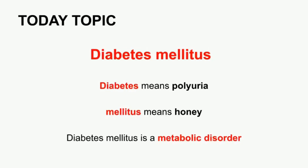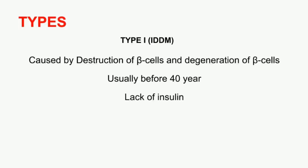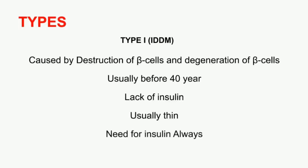Diabetes mellitus is one of the metabolic disorders. There are two types: Type 1 and Type 2. In Type 1, beta cells are destroyed. Beta cells are most important for insulin function. There is a lack of insulin, and the insulin produced is not correct or sufficient.